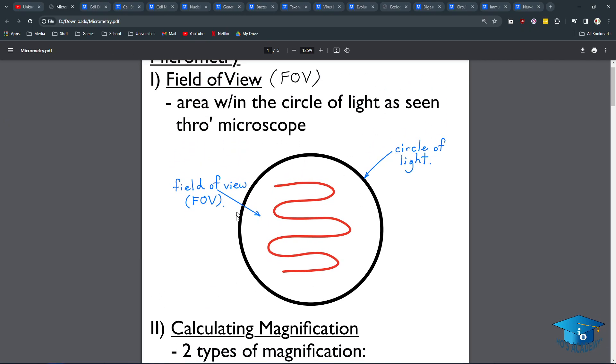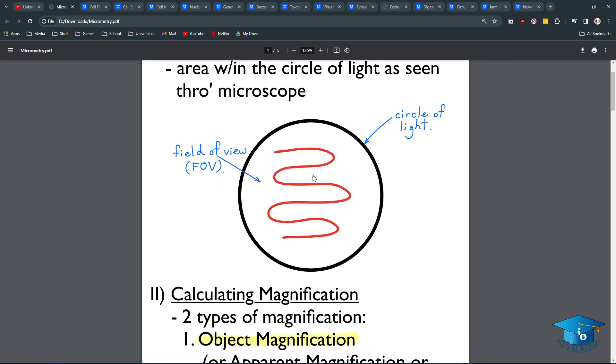There's field of view, which is what we can see from the microscope, like what we see through. And the circle of light, because it's illuminated from the bottom, and then this is what we see. This is some kind of string organism.